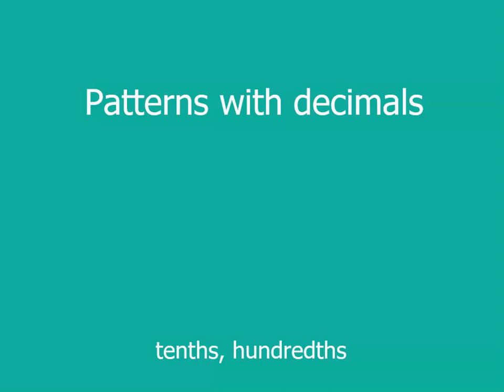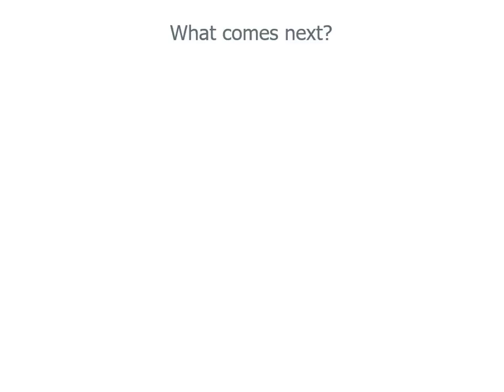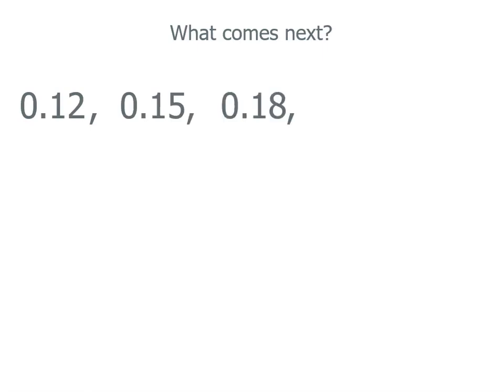Let's see if we can spot a pattern with our decimals. What comes next when you see these numbers? Can you see a pattern and could you work out what the next couple of numbers are? What about if I actually change something slightly and had this instead?